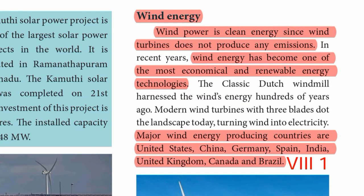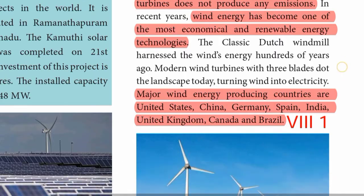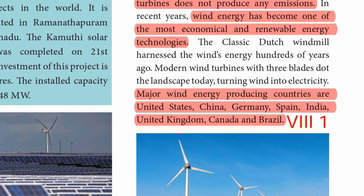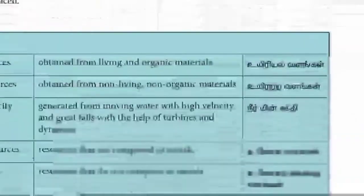Wind energy: turbines do not produce any emissions. Wind energy has become one of the most economical and renewable energy technologies. Major wind energy producing countries are United States, China, Germany, Spain, India, United Kingdom, Canada and Brazil. That completes Roman numeral 8, first answer: Explain the different types of renewable resources.